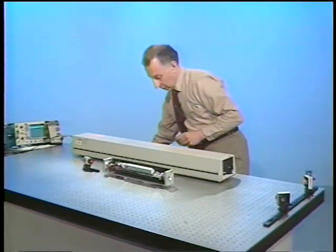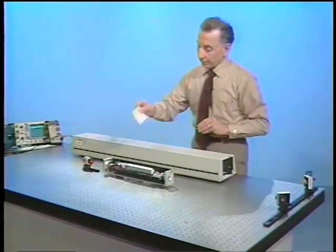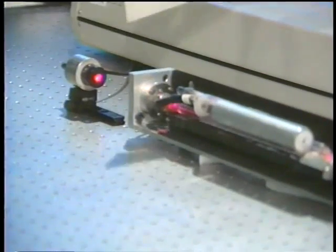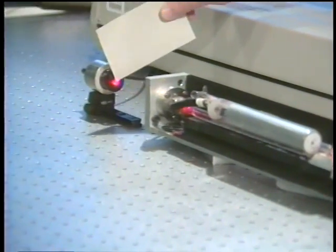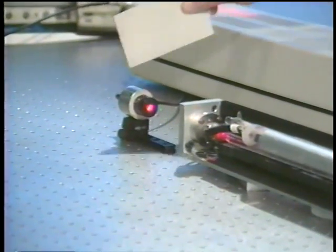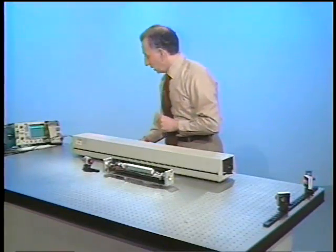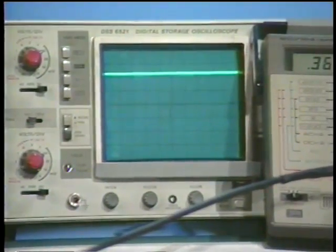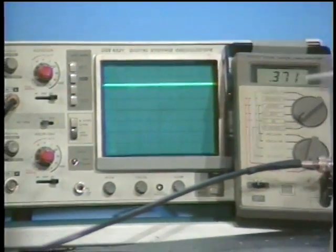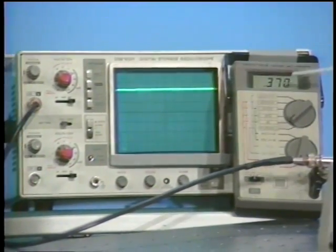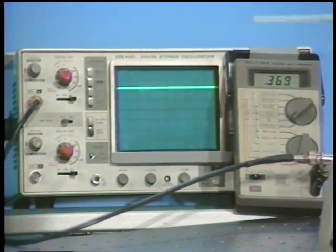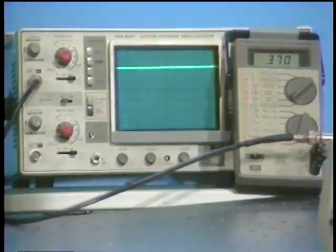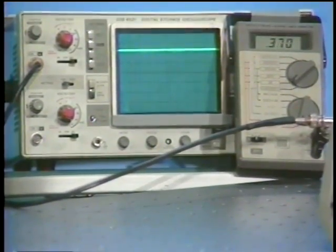So then the output through this amplifier, and the amplifier right now is turned off, then goes onto a detector over here. And then the output of the detector then goes onto a scope, onto an oscilloscope over here. And also, we look at the output on a digital meter. So we have two ways of looking at the same output.